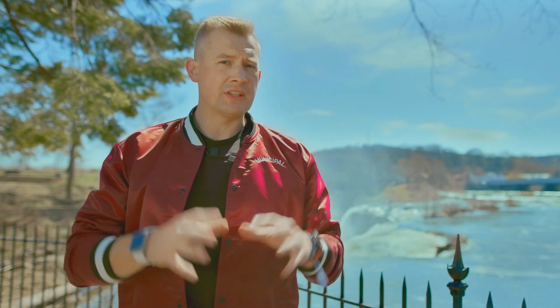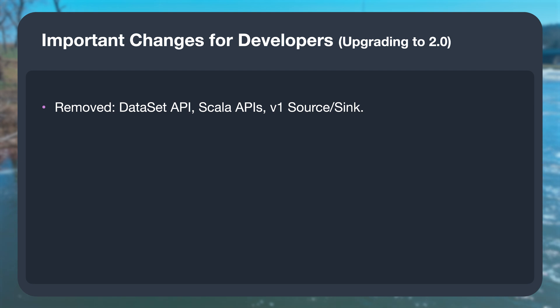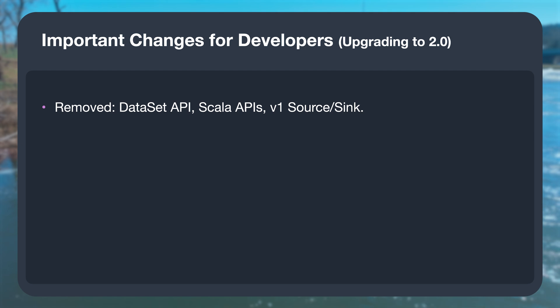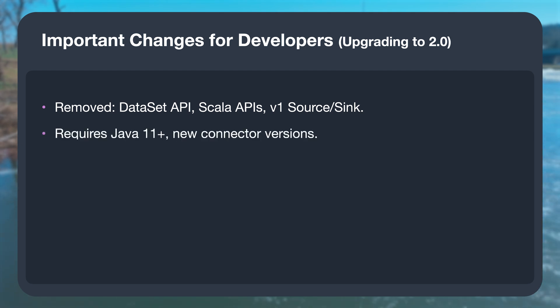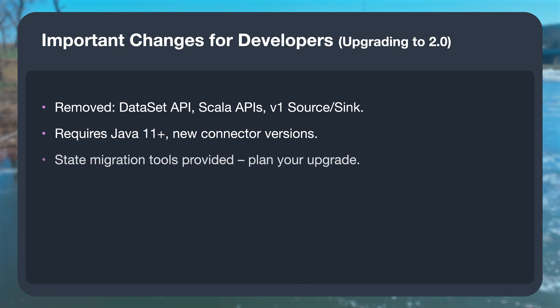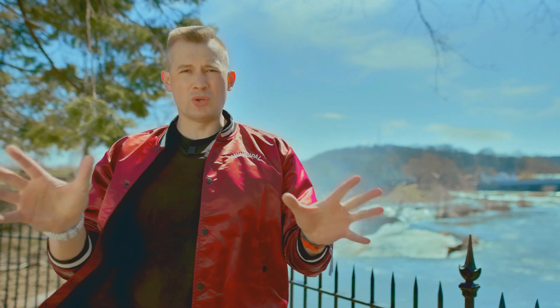For developers, let's talk about how these changes affect you. Some old stuff is gone: the DataSet API, old Source and Sink APIs are removed. And the Scala DataStream API is also gone forever. Java 11 is the minimum now, with Java 17 and Java 21 also supported. Some connectors will need to be updated to use new APIs. You may also need to migrate your savepoints since the state format has changed — but there are tools to help you.